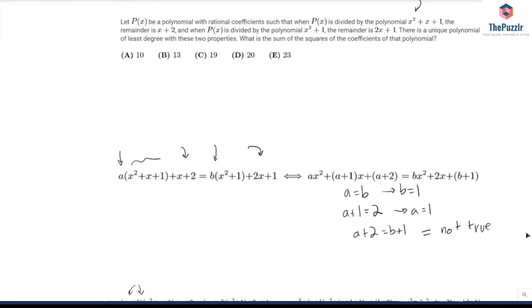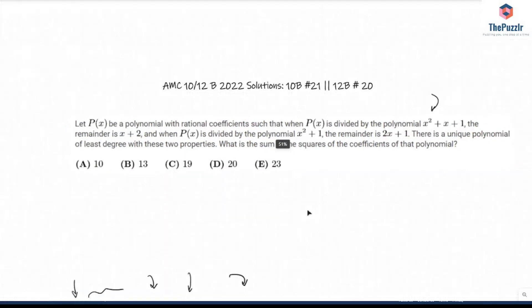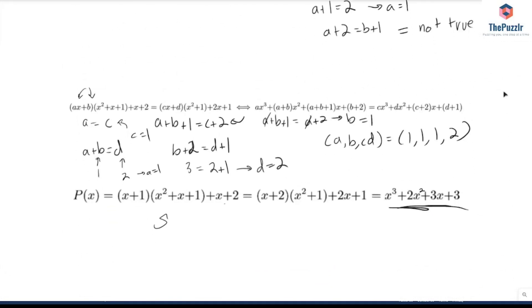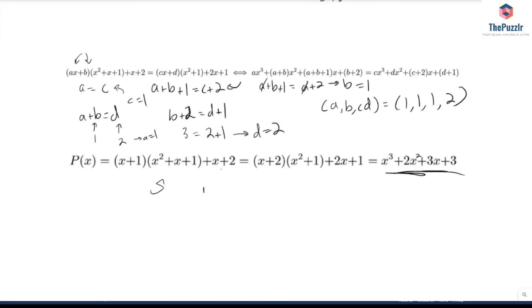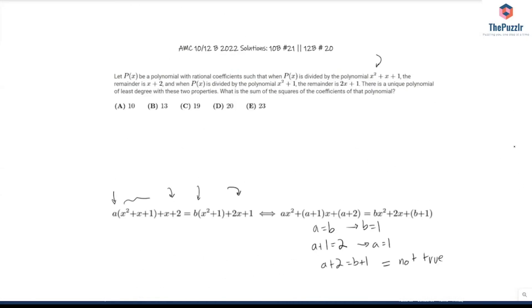Okay, now if we go back to the problem statement, what is the sum of the squares of the coefficients of that polynomial? So if we go down, we have 1 + 4 + 9 + 9 equals 23. If we go back up, our answer is E, and we're done.